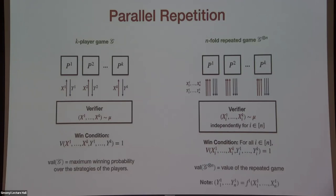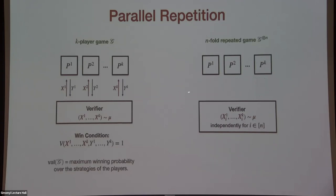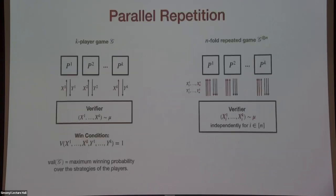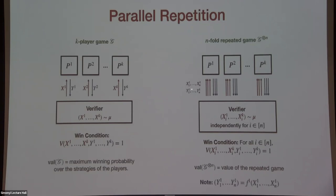An important point: in the repeated game G to the n, all of the first player's answers y1 for coordinates 1 to n can simultaneously depend on all of the first player's questions x1 for coordinates 1 to n. This is a very important point as we'll see later.